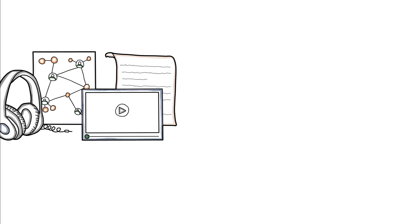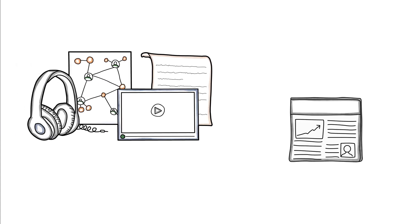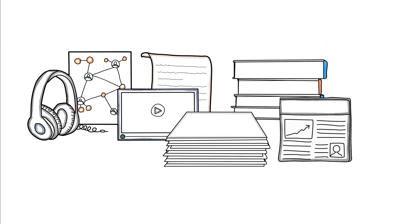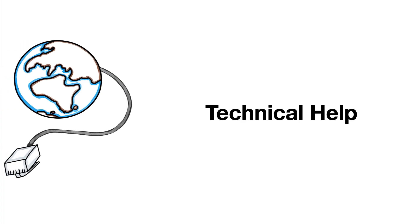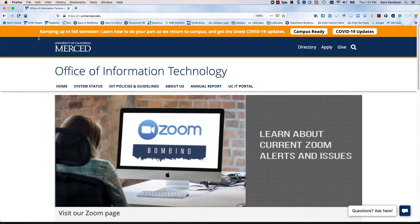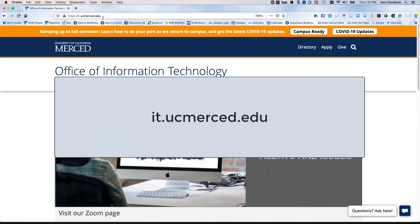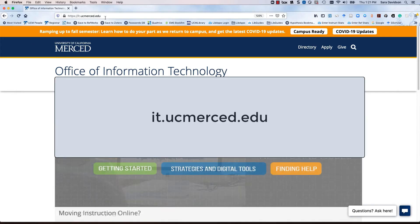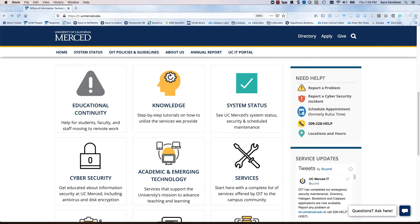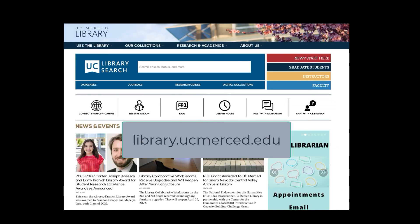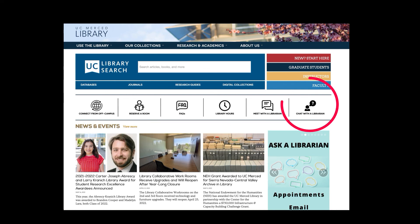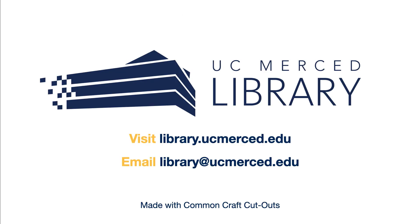Now you are ready to start accessing the extensive information resources available to you. For technical assistance, please contact the Office of Information Technology. Visit the OIT website, it.ucmerced.edu, and look for 'need help.' For questions about access to information resources, please contact the library. Visit the library website, library.ucmerced.edu, and look for 'chat with a librarian.'